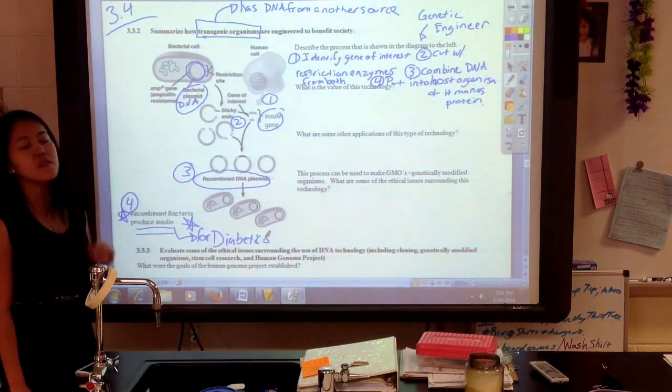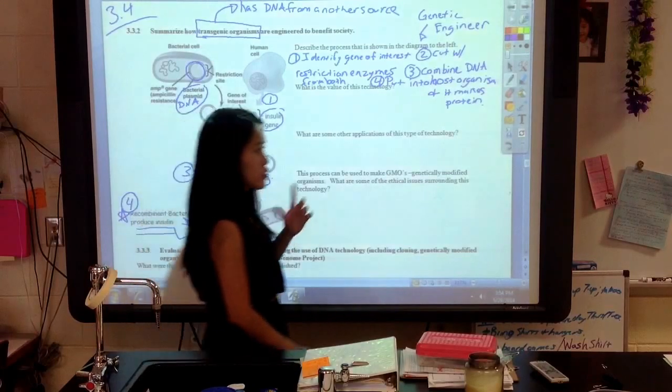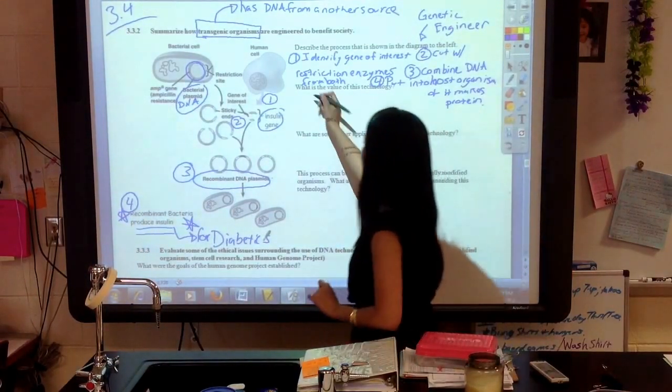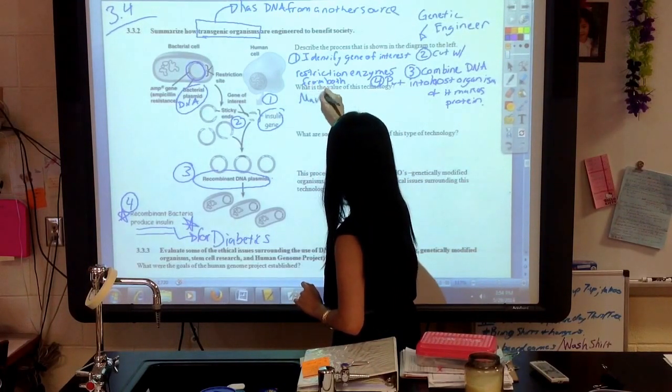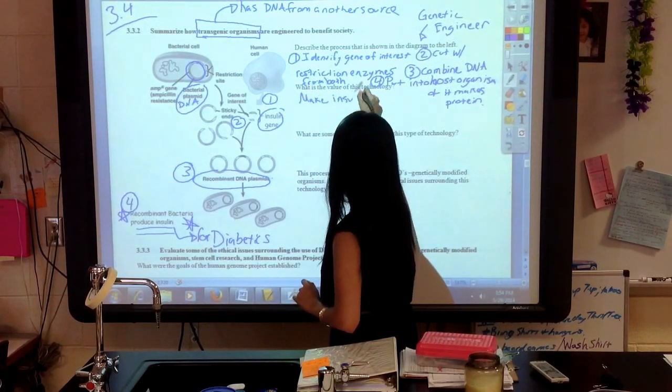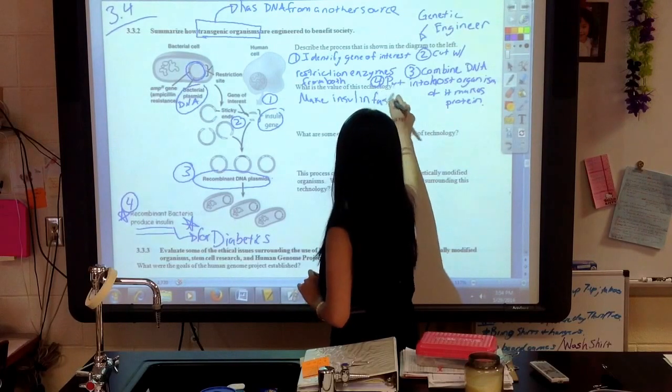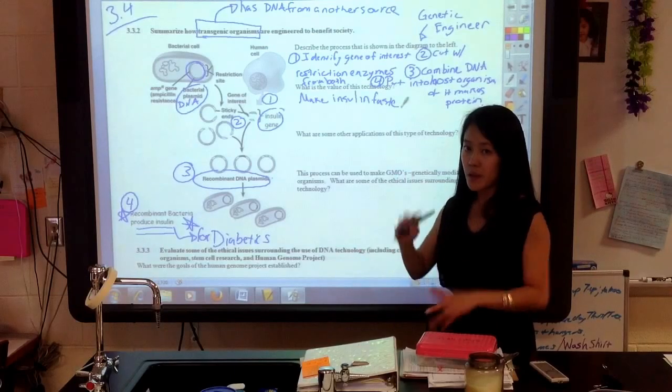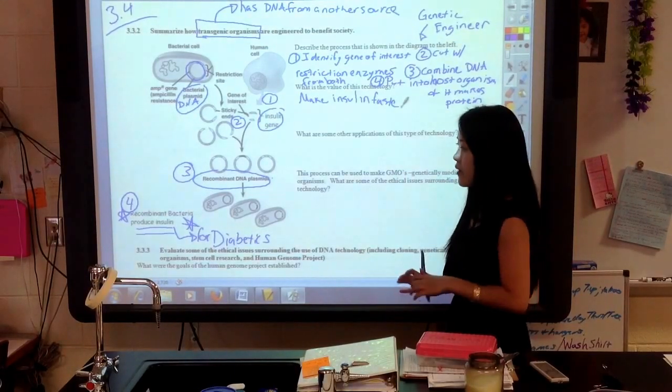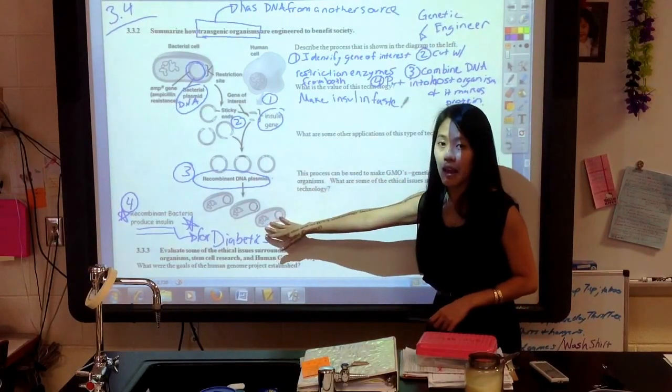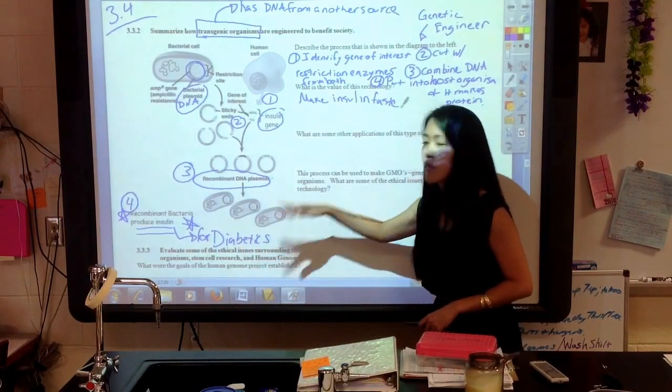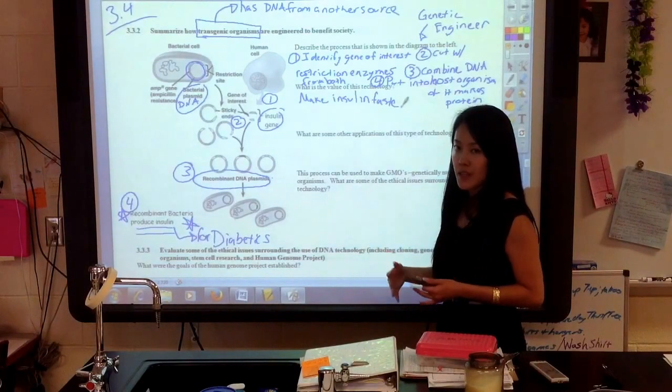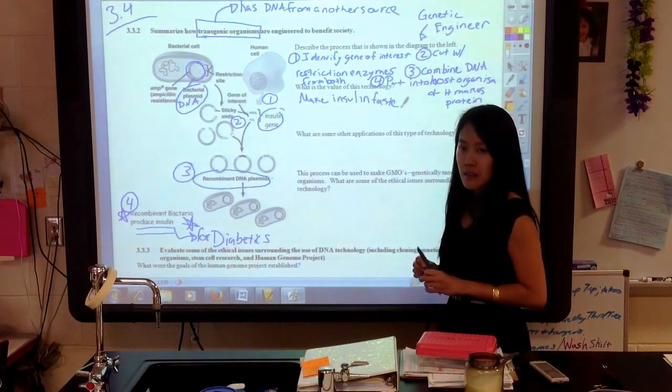It's really important that you know that this is mainly how we make insulin for diabetics. Next question asks you, what is the value of this technology? Well, in this specific example, we can make insulin a lot faster. They used to have to take out the pancreas of a cow or pancreas of a pig and grind it up to get the insulin out. Now we can get bacteria to do it in the lab. And because bacteria can replicate themselves, make copies of themselves so quickly, we can get thousands of bacteria making a little bit of insulin all the time.